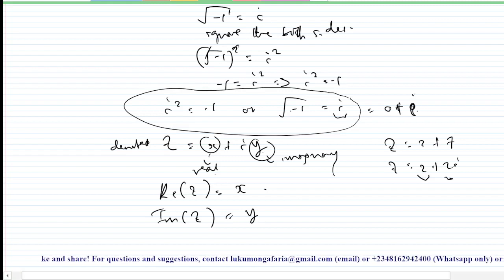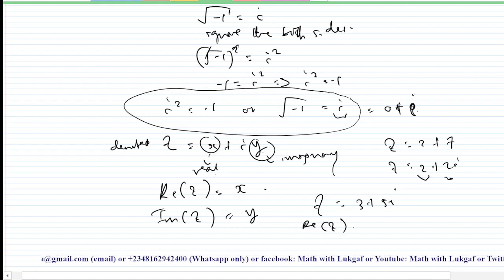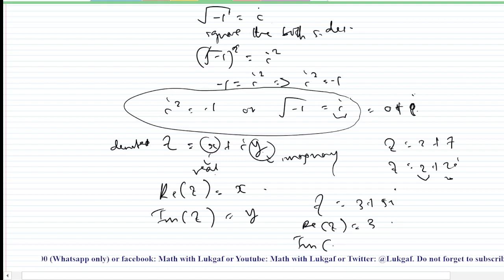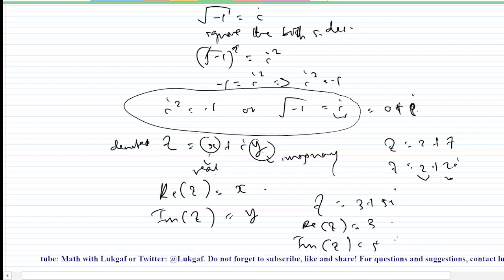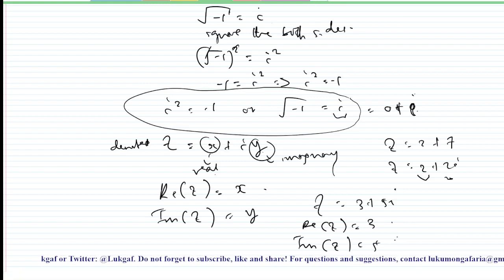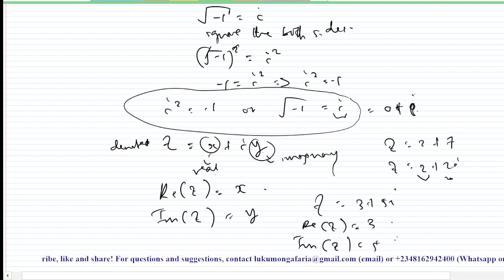For example, if z equals three plus five i, then the real part is three and the imaginary part is five. If you understand this, I'm going to stop here and continue in the next video. Please don't forget to like, share, and subscribe. Thank you.